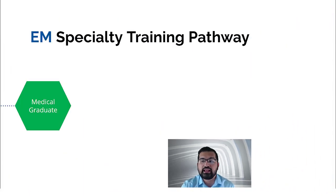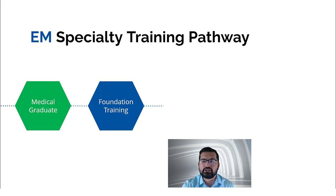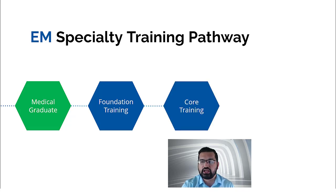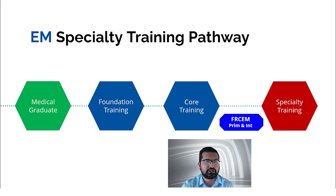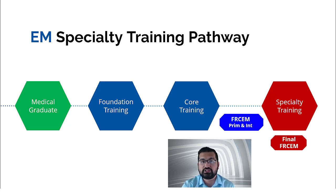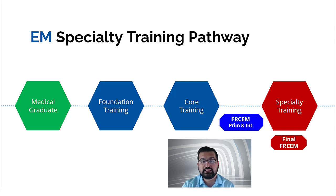For any specialty training, you obviously have to be a medical graduate first, then you do foundation training, then core training, and then you pass FRCEM primary and intermediate during core training before you can apply for higher specialty training. During higher specialty training, you pass the final FRCEM and then obtain a Certificate of Completion of Training. This is the bare bone structure of the whole specialty training pathway.